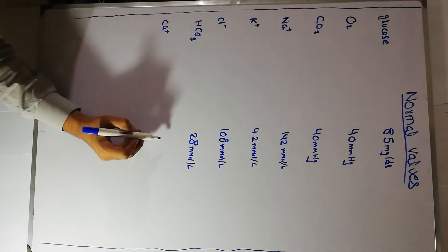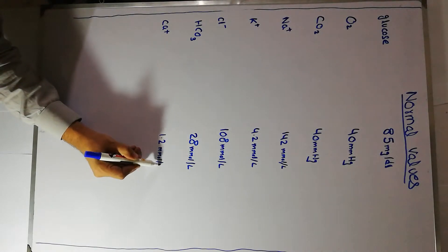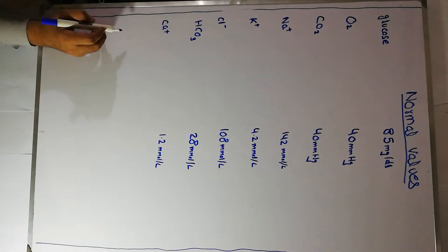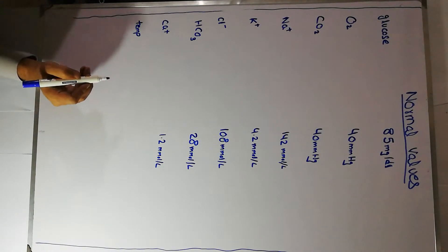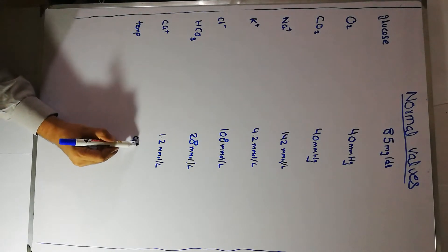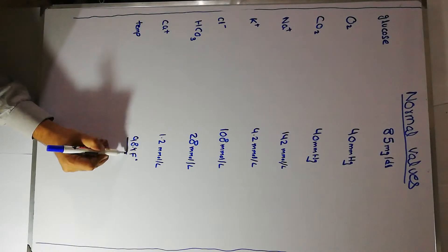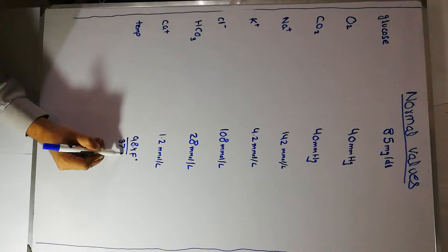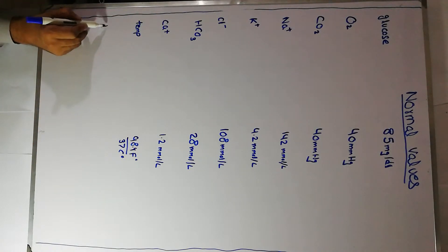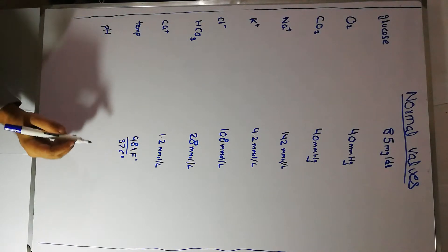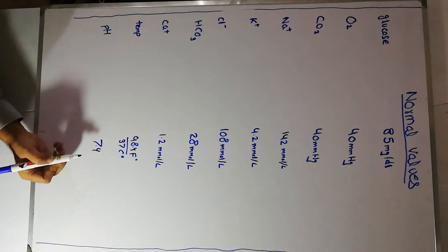Calcium is about 1.2 millimoles per liter. Then we have the temperature of the human body, which is about 98.4 degrees Fahrenheit or 37 degrees centigrade. And last but not the least, we have pH, which is about 7.4 in the extracellular fluid.